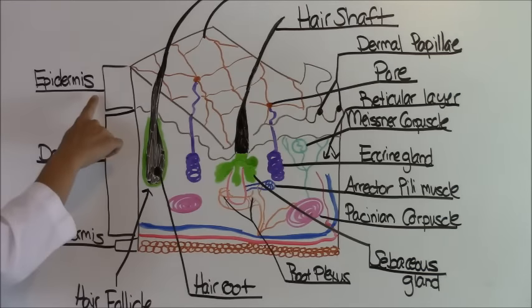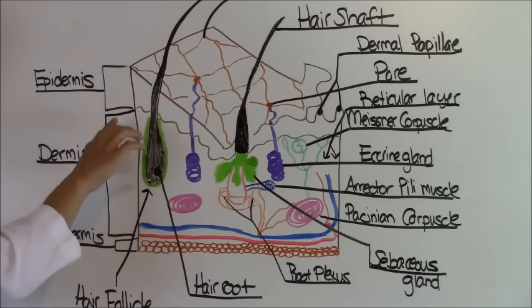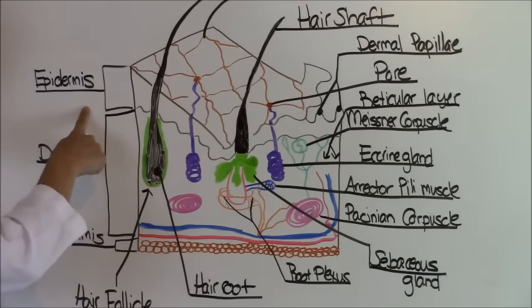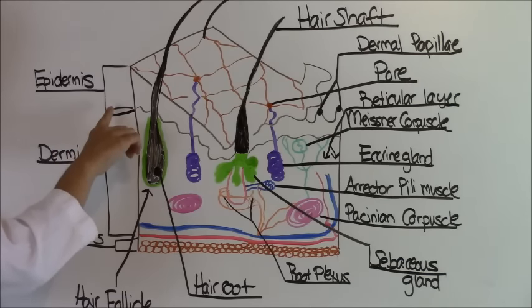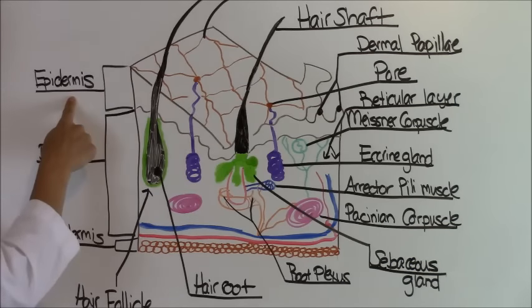We have the epidermis, which is the superficial layer. It is made up of keratinized stratified squamous epithelium that contains four distinct types of cells. You have keratinocytes, melanocytes, Merkel cells, and Langerhans cells that make up the epidermis.